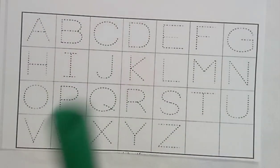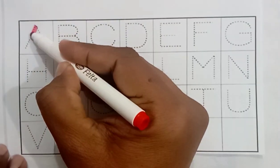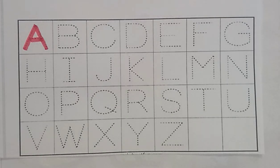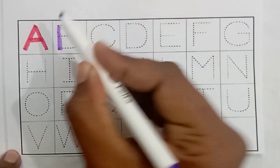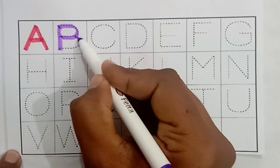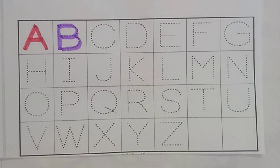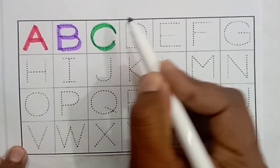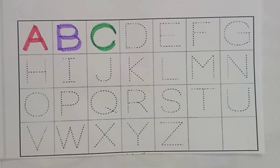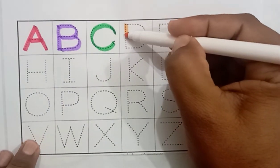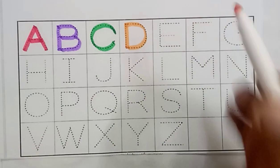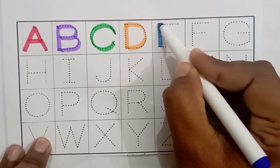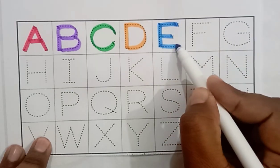Let's start! Red color A, A for apple. Purple color B, B for banana. Green color C, C for cat. Orange color D, D for duck. Blue color E, E for elephant.